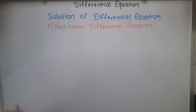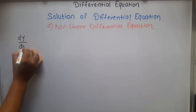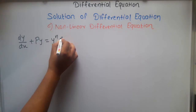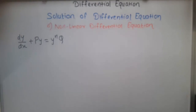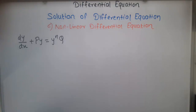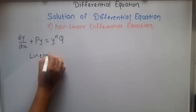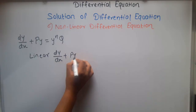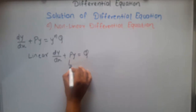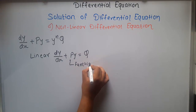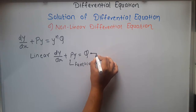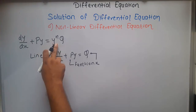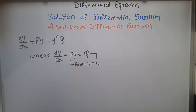If we have a differential equation dy/dx + Py = y^n, this is a non-linear type equation. In the linear type we have dy/dx + Py = Q, where P and Q are functions of x. But in this case Q contains a power of y, so this is called a non-linear differential equation.